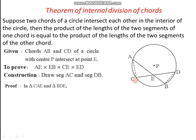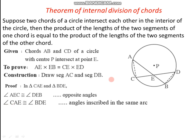For these two triangles, we have the first pair of congruent components: angle AEC is congruent to angle DEB, as these two angles are vertically opposite angles, they must be congruent. Now we have another component: angle CAE is congruent to angle BDE, as both of these angles are inscribed in the same arc — angle CAE and angle BDE are inscribed in arc CD. We know that if two angles are inscribed in the same arc, those must be congruent.